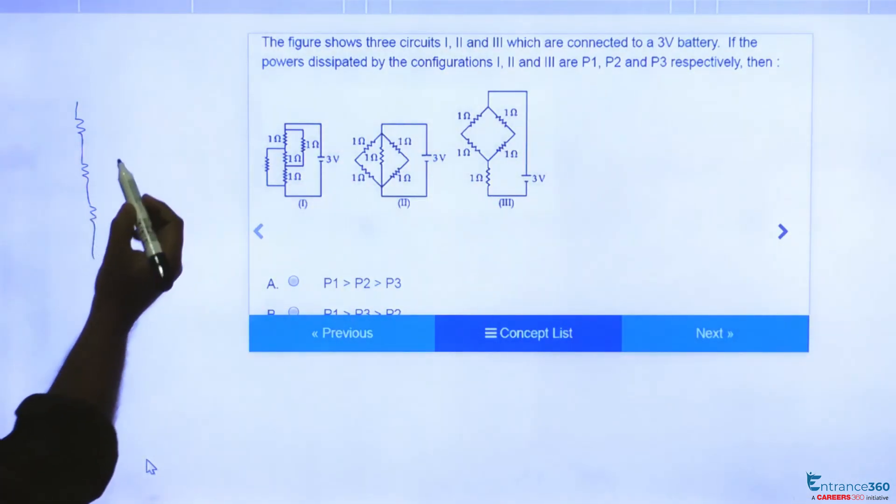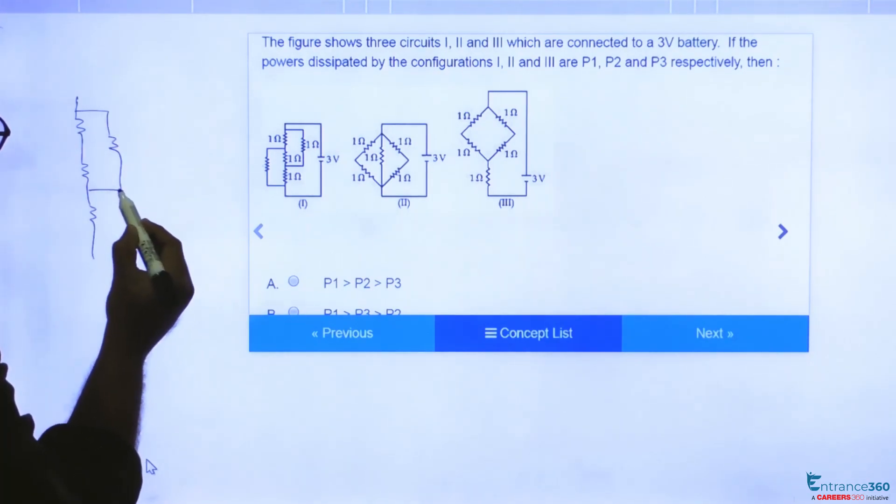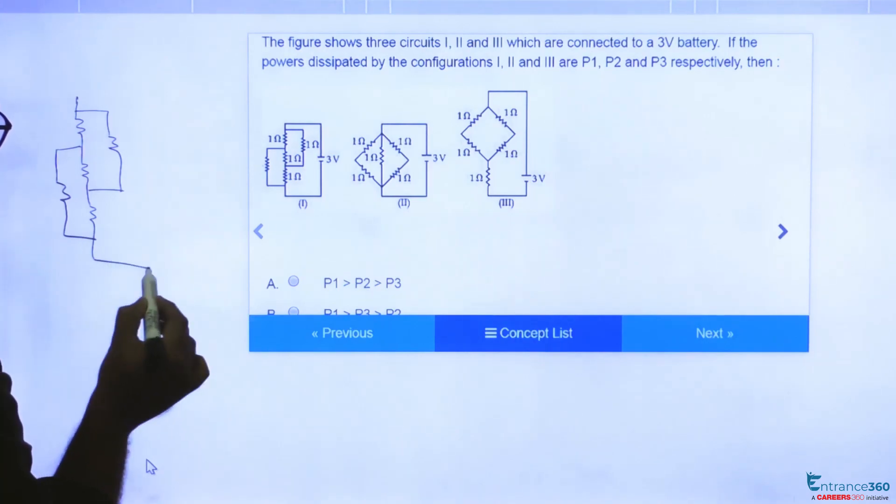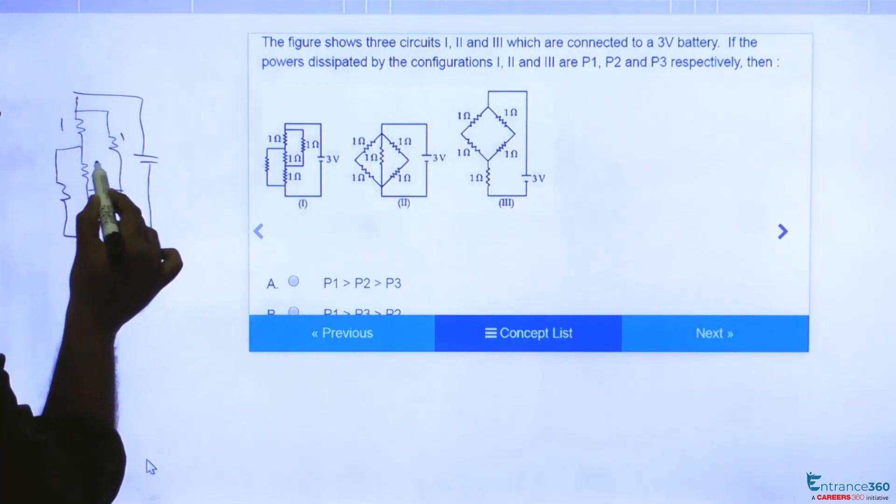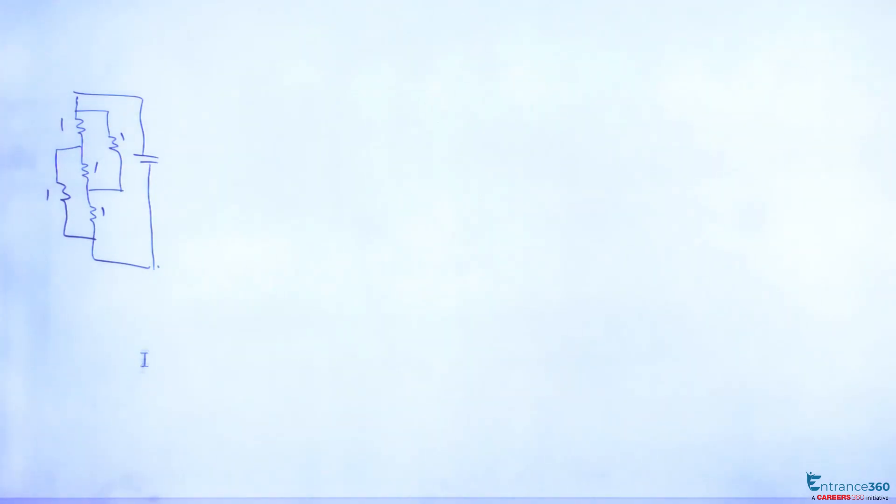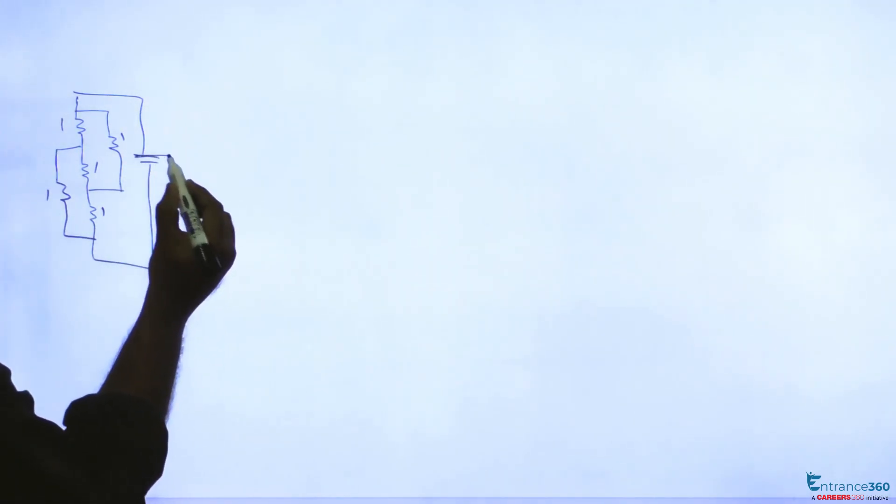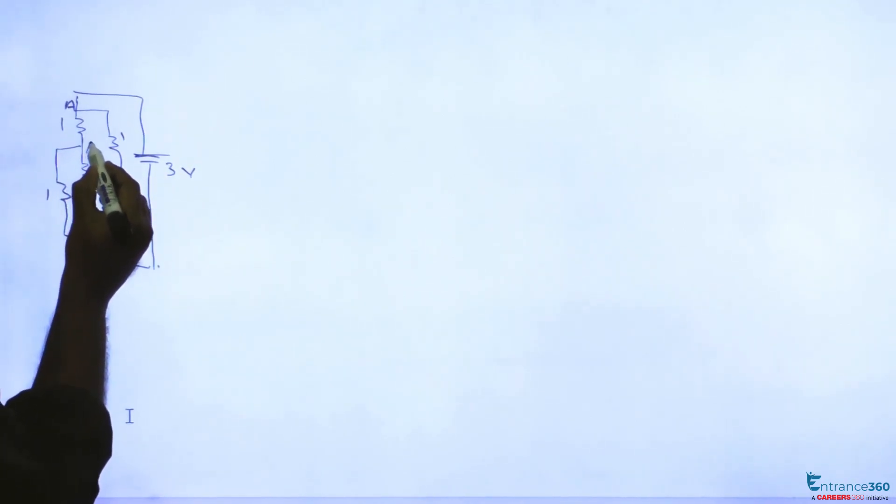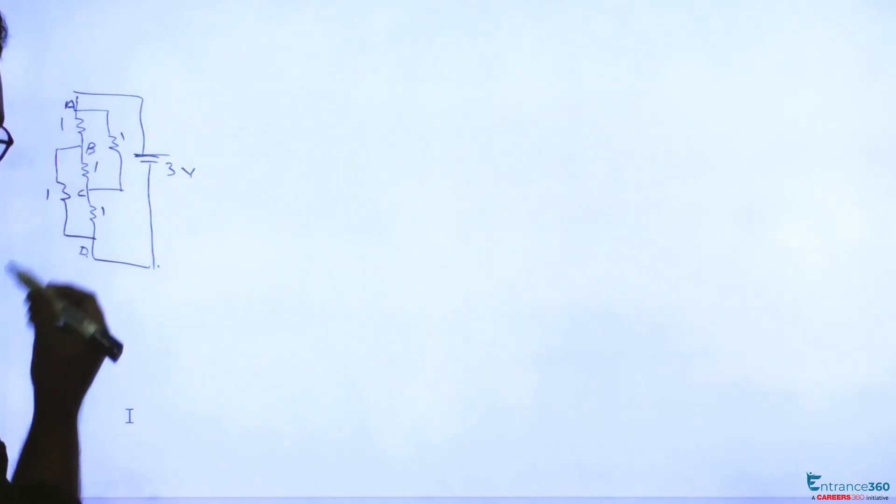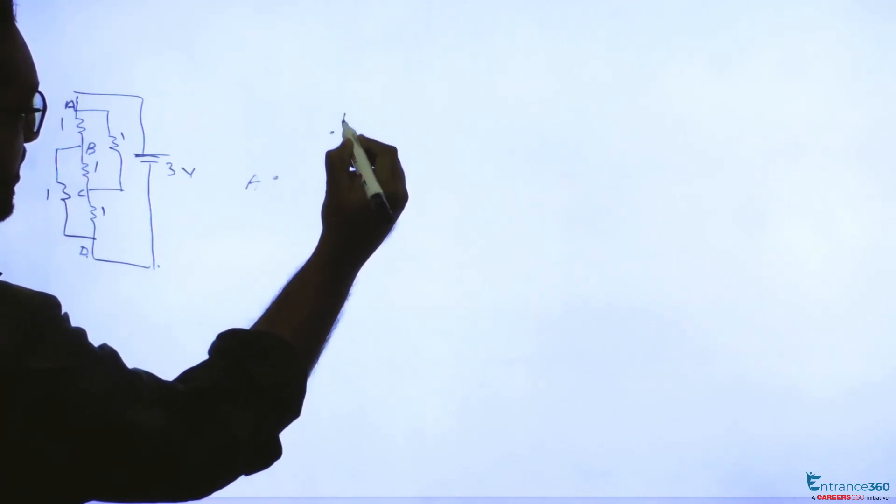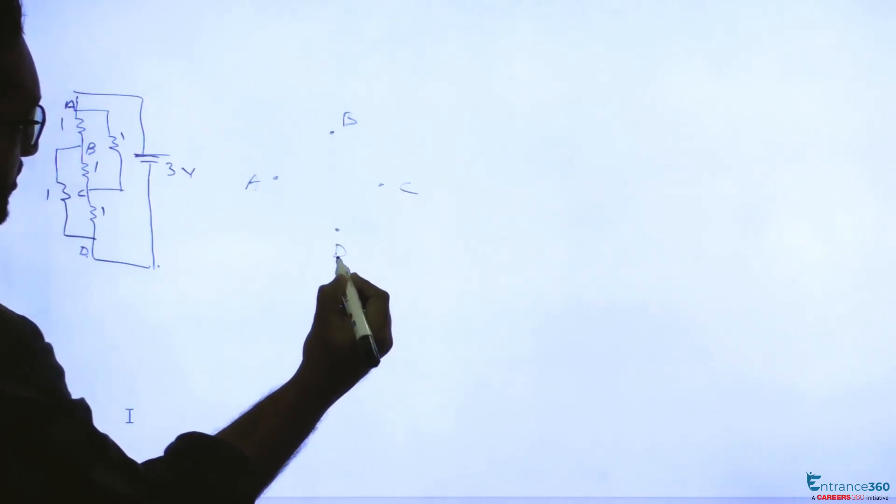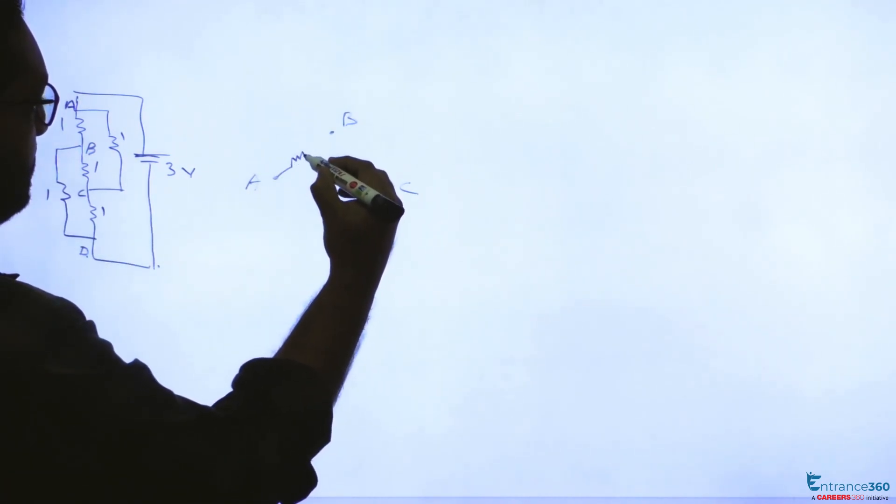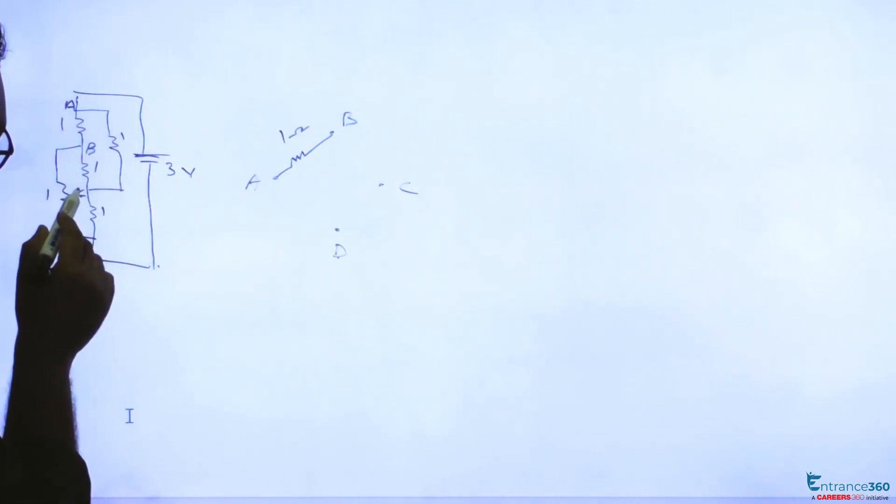For the first circuit, let's draw it. The first circuit is like this with each of one ohm resistance. This is 3 volts. If we take this point as A, this as B, this as C, and this as D, let's mark the points here A, B, C, and D.